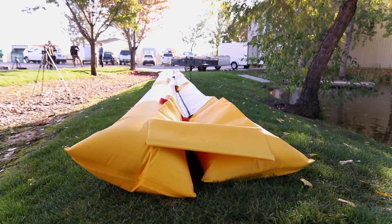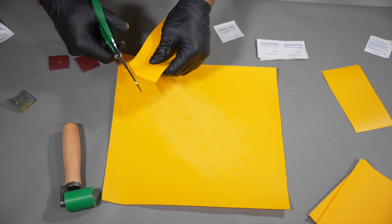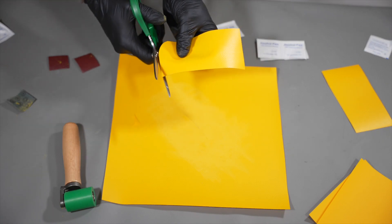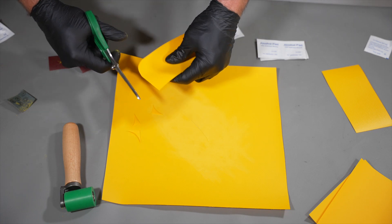To begin your glue-on patch repair, drain and dry the diversion tube entirely. Next, using the provided 22-ounce PVC fabric, cut out a rounded patch that is at least 2 inches larger than the hole on all sides.